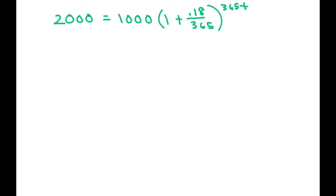When you divide both sides by 1,000, you're just going to get 2. So you're dividing both sides by 1,000 and you get 2 equals...